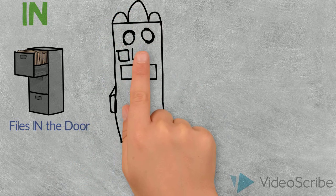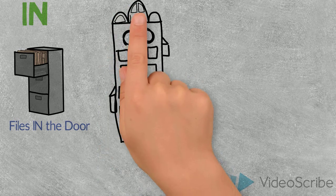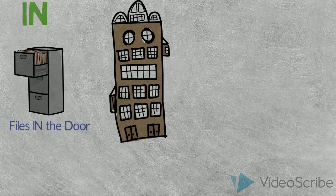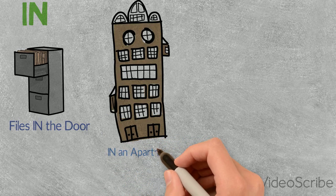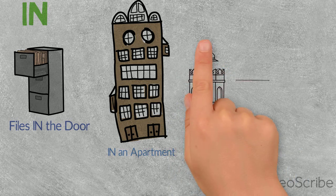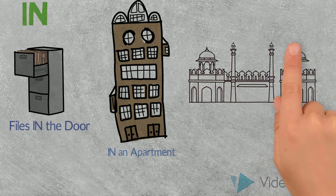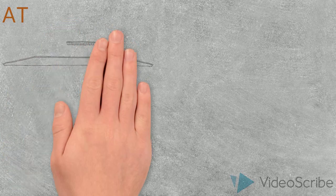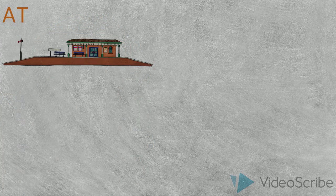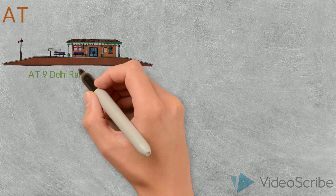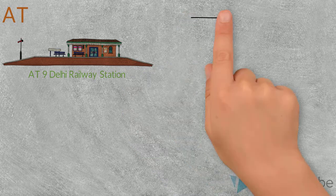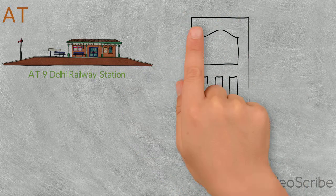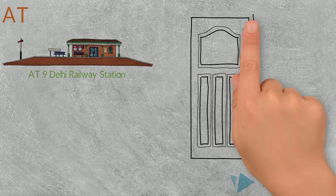Similarly, for a building with many apartments: 'I am living in this building.' For an apartment number: 'in an apartment.' Same way, if you are living in India, you say 'live in India,' or 'live in USA.' For 'at' — it is used when you specify an address with a number, like 'at 9th railway station.' Also: 'My friends meet at my home' — here we've given a specific location.